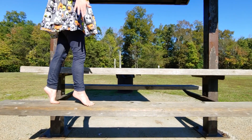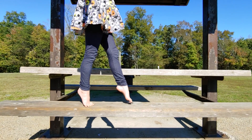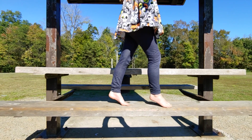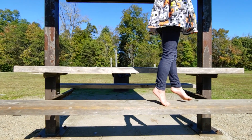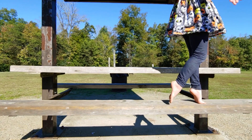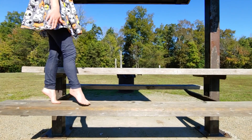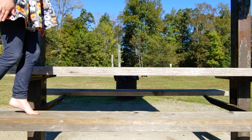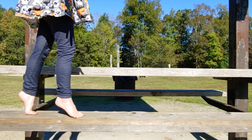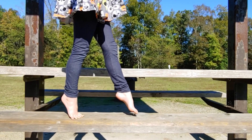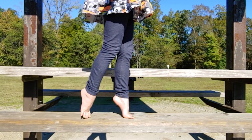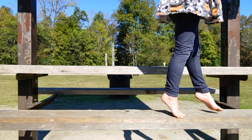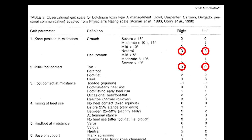On the first gait parameter, knee position at mid stance, this is looking at what her knee is doing when her knee is directly over the planted foot during gait. She does not have a crouch and she does not back knee or have recurvatum. So she scores three points on both legs. On the next gait parameter, initial foot contact, Lindsay initially contacts with only her toe on both her right and her left foot, so she gets zero points on each leg.